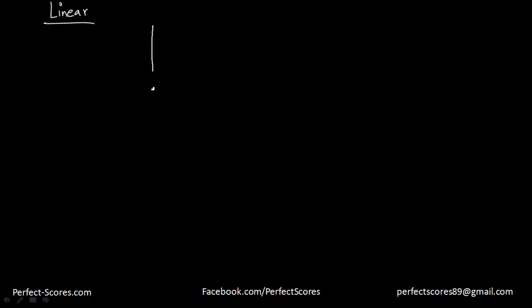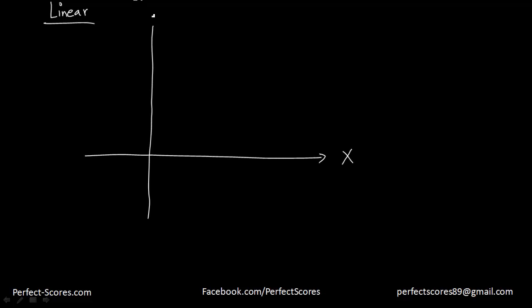Now what is a linear function? A linear function — the inception of the linear function — we can start from the coordinate plane. This is the x-axis and this is the y-axis. A linear function has the maximum power of x equal to 1. That is what a linear function is.